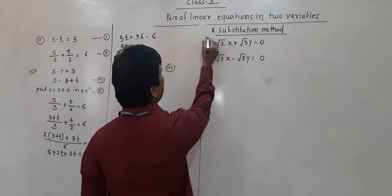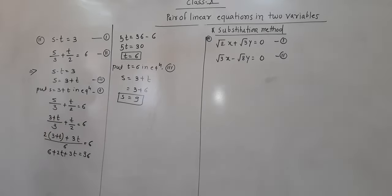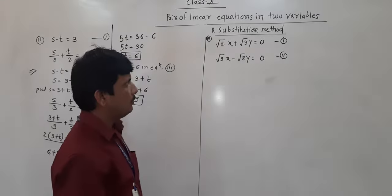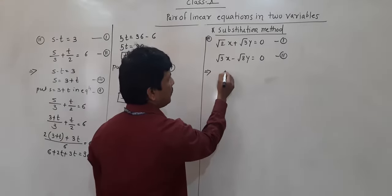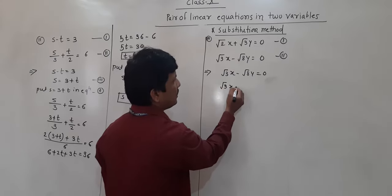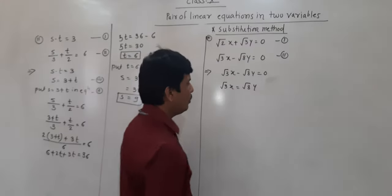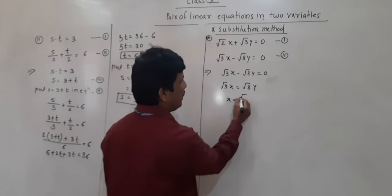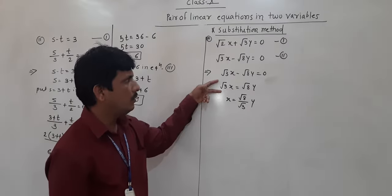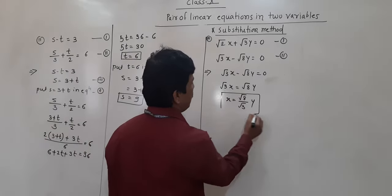Now one more example — the third one. Here the first equation is root 2·x plus root 3·y is equal to 0, and the second equation is root 3·x minus root 8·y is equal to 0. Any one equation we can use for substitution. Taking the second equation: root 3·x minus root 8·y equals 0. So root 3·x equals root 8·y, which gives x equals root 8·y divided by root 3.